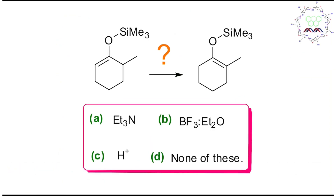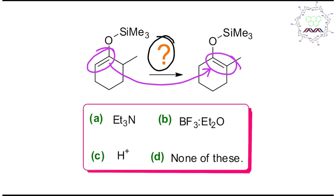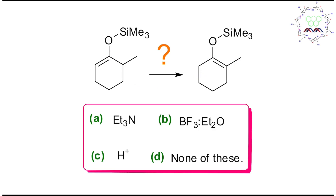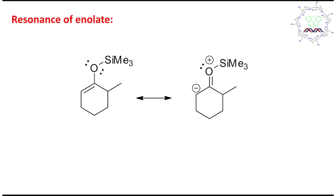Now let's start the discussion. The question asks: what reagent is needed for the transformation? This transformation involves a double bond or alkene being shifted — a less substituted alkene is converted into a more substituted alkene. You may also consider this as an enol ether or enolate. Before going into details, we need to understand the electronic distribution of this molecule so that the chemical reactivity can be understood properly.